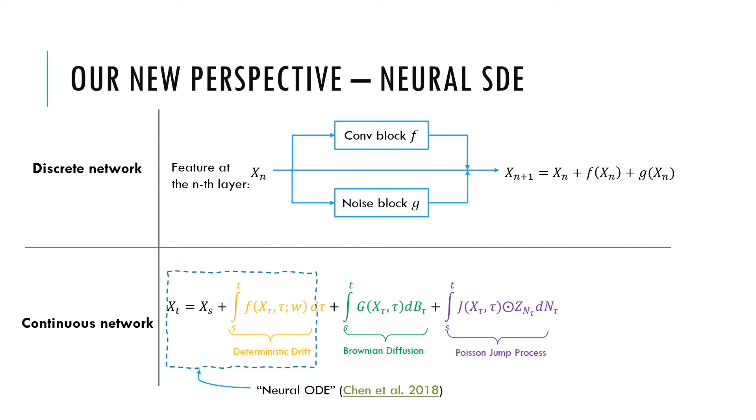Now let's follow the idea of Neural ODE paper by Chen et al. We developed a continuous version when the noise layer comes into play, i.e., we added two more integrals shown as Brownian diffusion and Poisson jump process. Readers can see our paper for more details regarding this.